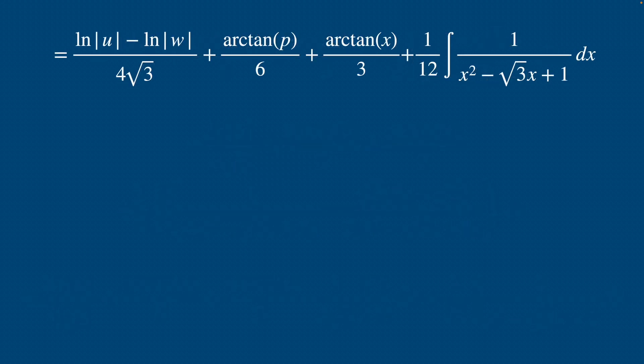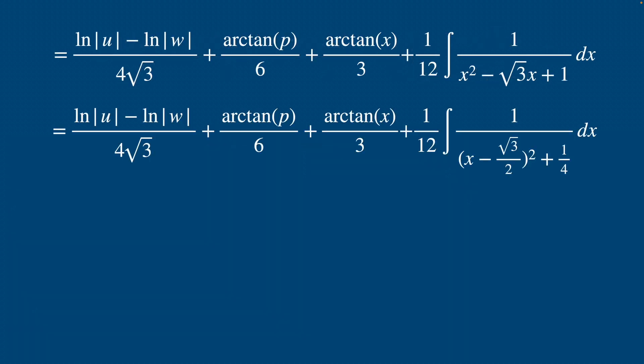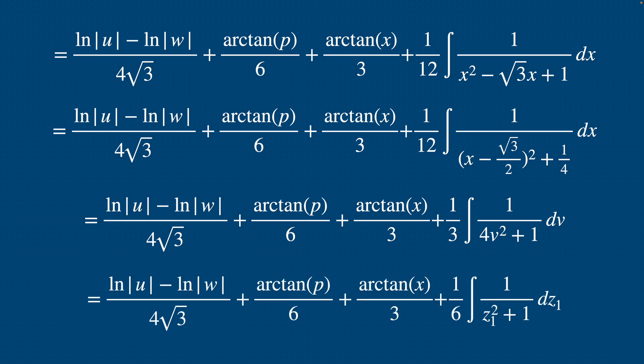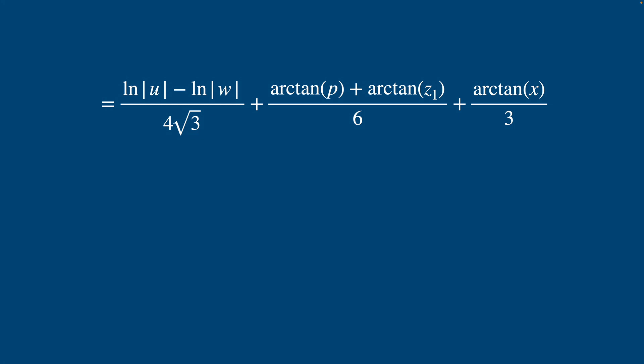So we have this here. And now we complete the square for our last integrand like so. And then we substitute in v for x minus root 3 over 2 and dv for dx and take out 1 over 4 from the denominator. So now we substitute in z sub 1 for 2v and dz sub 1 for 2dv. And then this integral is obviously going to be the arctan of z sub 1 like so.